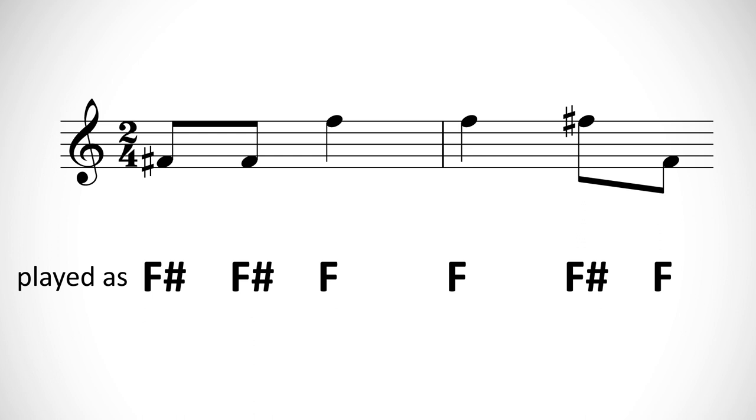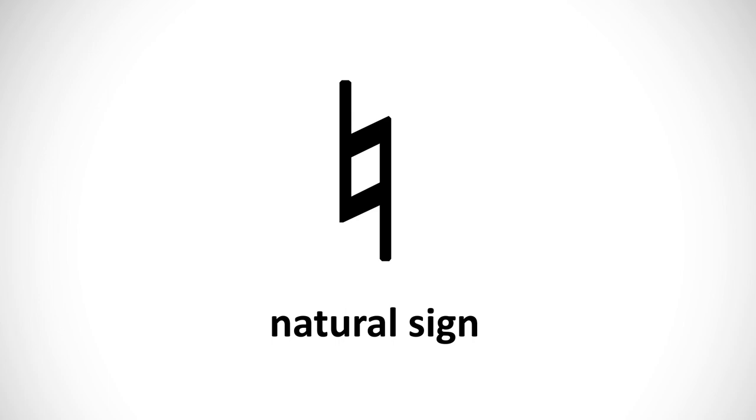In order to undo a sharp or flat you've applied to a note earlier in the measure, you'll use a natural sign which looks like this. And in written music, it will also go in front of the note, just like sharps and flats.